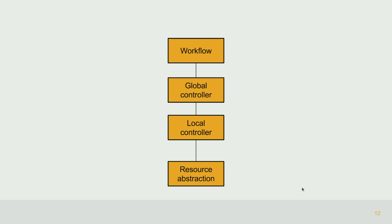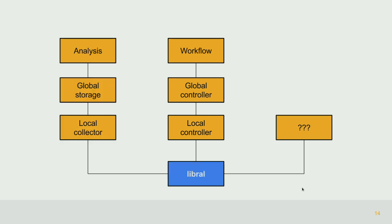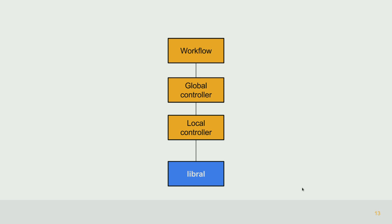Those of you who've used Ansible might think there's no local controller — but in Ansible, the local controller is Python code that the global controller puts together, copies to the system, and then it runs there. There's always something that you put on the system you're managing to run there. This is the place that LibRAL slots into: the resource abstraction that these config management systems rest on. The sad thing is these resource abstraction layers have a ton of work in them, but they're only usable with the tool they're written for. You can't use Puppet's resource abstraction layer by itself — you need to install the full agent.